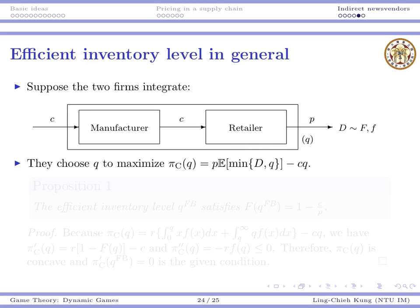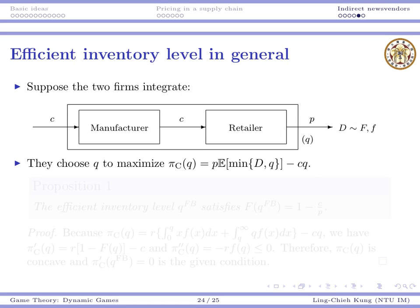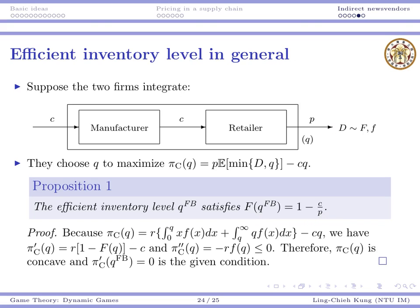Now suppose they integrate as a single entity and choose q to maximize system profit. With general demand distribution, we have the proposition that the efficient inventory level satisfies the standard newsvendor optimality condition: F(q) = (p − c)/p, where c is the input cost and p is the output price. This derivation uses first and second order conditions.